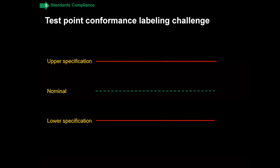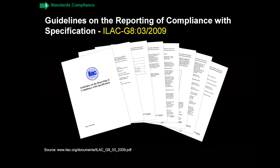Now we want to go back to the test point labeling challenge we looked at earlier. If it's way out of spec, we all know that's a fail; if it's way inside, that's a pass. The real question is: what do you do when the measurement uncertainty crosses the specification? That's really what ILAC G8 is all about. Look at the title — there's a link at the bottom, you can download it, it's free, and it's only about 10 pages long. Guidelines on the Reporting of Compliance with Specification.